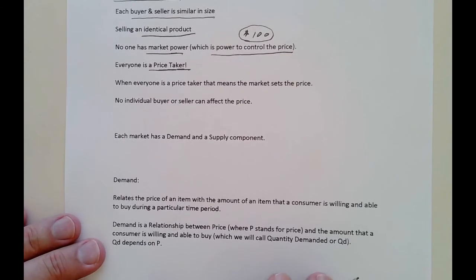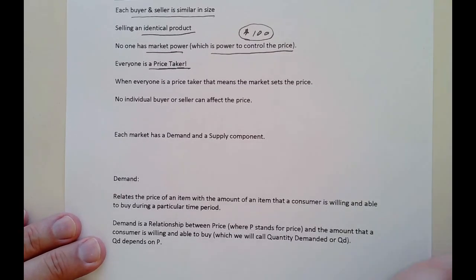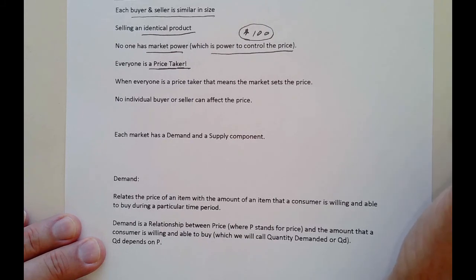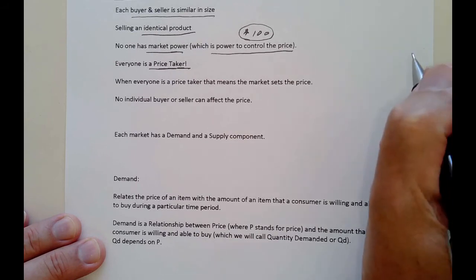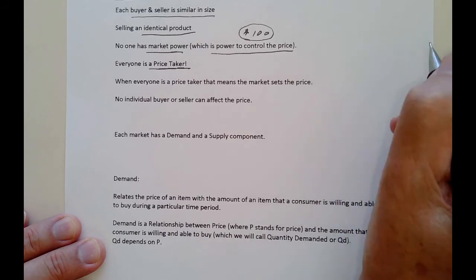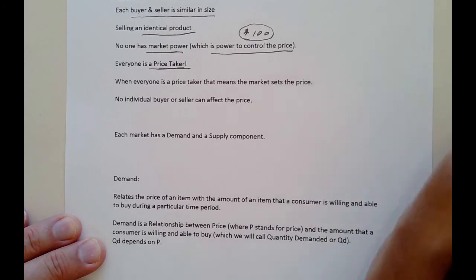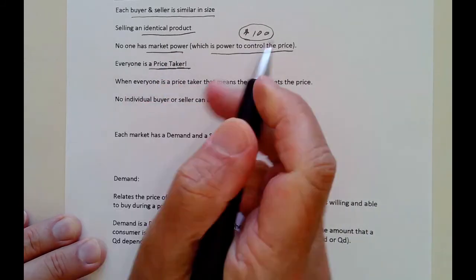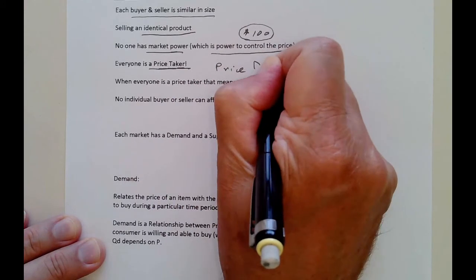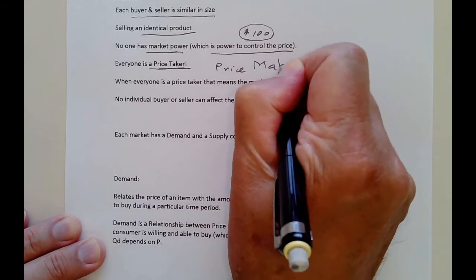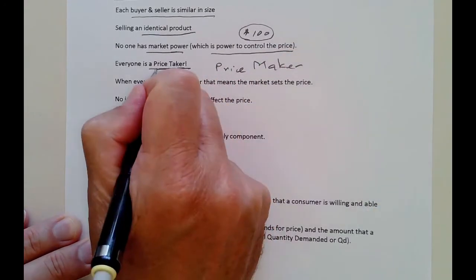Everyone in these markets is a price taker — and you and I most likely are too. If you want to buy a gallon of milk at a supermarket and the price is $5, but you tell the cashier you want to pay $3, it's not going to happen. They'll look at you strangely, maybe call security. Because you are not a price maker — a price maker has the power to set the price. You are a price taker.